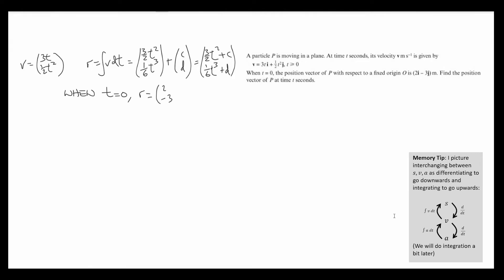If we substitute t equals 0, looking at the top line, looking at the i components, I can see that 0 plus c should equal 2, which means c is 2. Similarly, looking at the j components, the bottom line, I can see that 0 plus d equals negative 3. d must be negative 3. Now that I know c and d, I can write a fully formed, generalised expression for the position vector in terms of t.